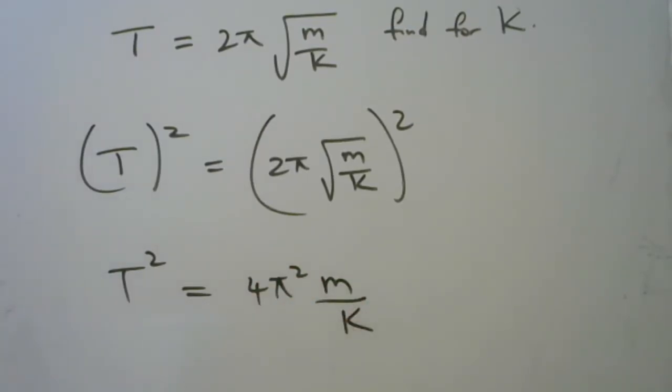Now, we need to get the k out of the denominator, and then we can regroup and get our answer. So let's do that now.